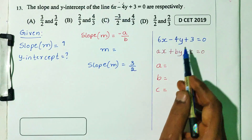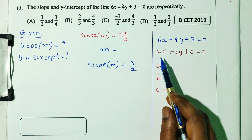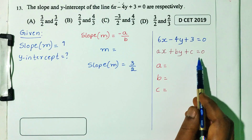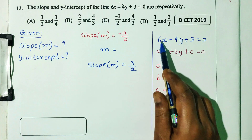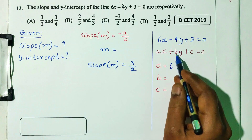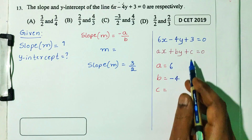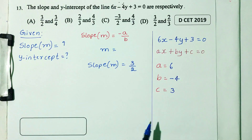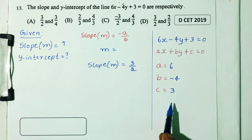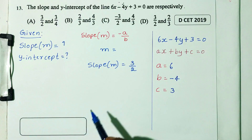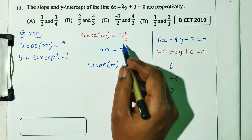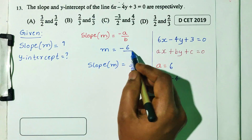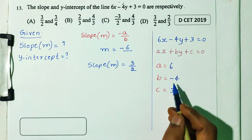Comparing 6x minus 4y plus 3 equals 0 to ax plus by plus c equals 0: a equals 6, b equals minus 4, c equals 3. Slope m equals minus a divided by b, so m equals minus 6 divided by minus 4.